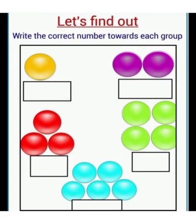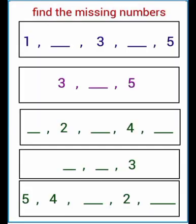Look at these pictures — here are some worksheets for you. Write the correct number towards each group. Try to draw different color blocks like this and write the number towards each group. Here some numbers are missing — find the missing numbers and write them there.